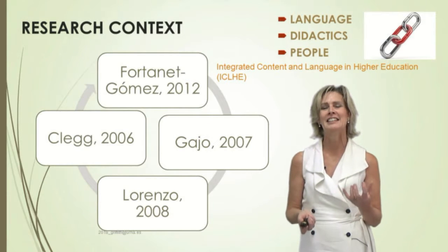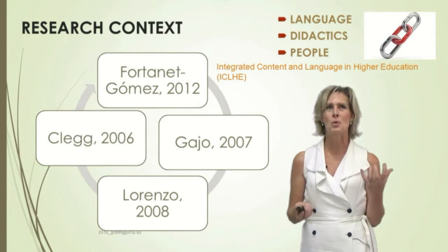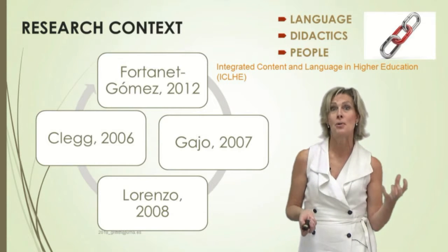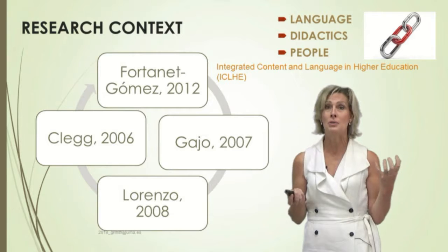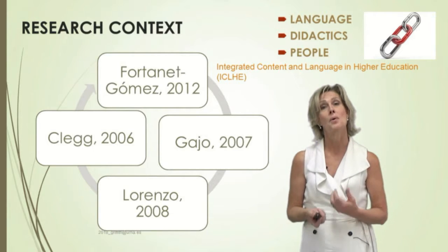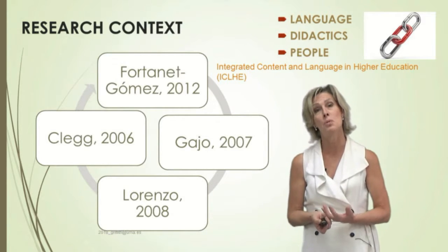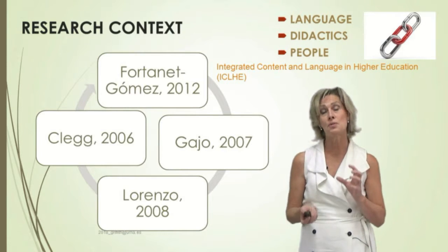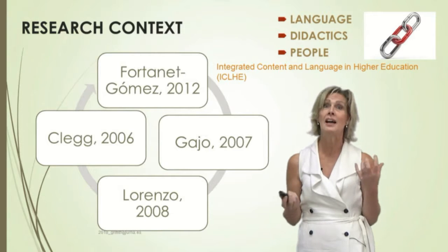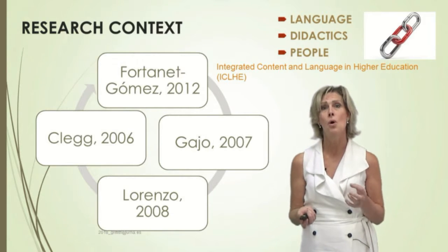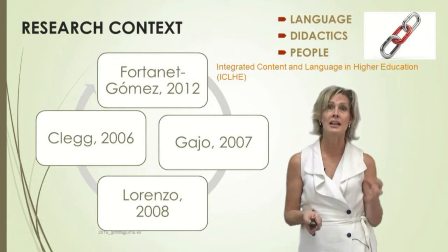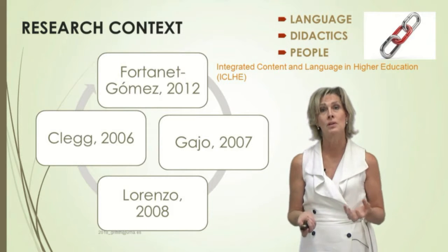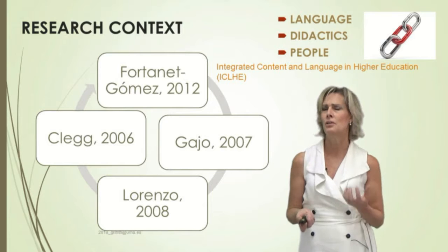The research context has to work in many different directions. We could take a look at language like Lorenzo, who talks about how teachers adapt text when they have to teach and communicate more effectively. Or we could look to content like Gajo, who shifts the focus from language to the idea behind the language. Or we could shift the focus once again, like Clegg, and talk about how learners struggle with this very challenging learning context.